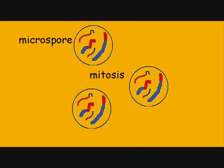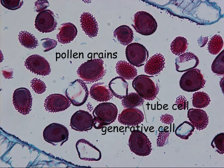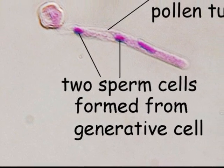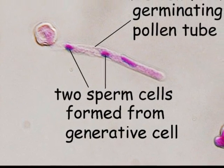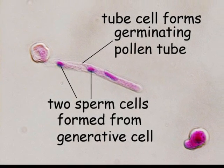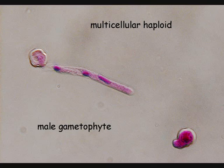A microspore will divide by mitosis to give rise to two cells contained inside the microspore wall. This becomes the pollen grain when the two cells become differentiated to form the tube cell and the generative cell. The generative cell will divide, forming two sperm cells. Altogether, the pollen grain now has three cells — the tube cell and two sperm cells. This is the mature male gametophyte because it is haploid, multicellular, and contains the male gametes of the plant.